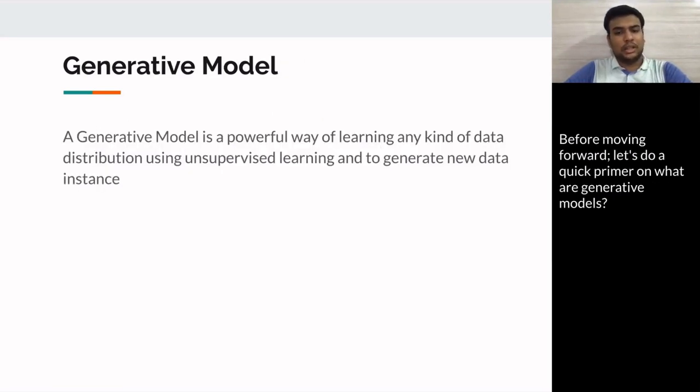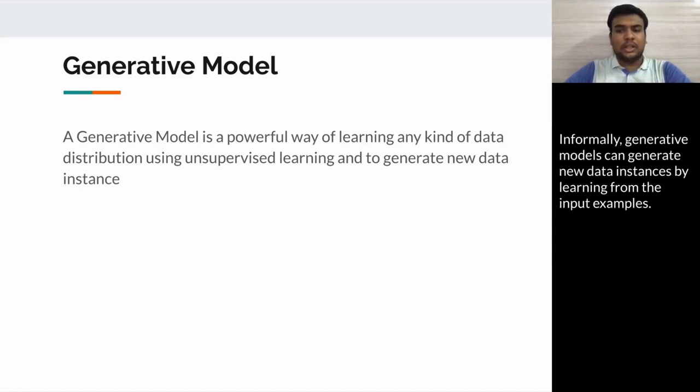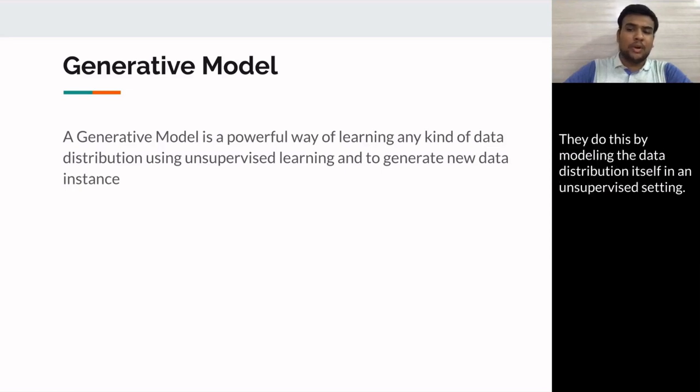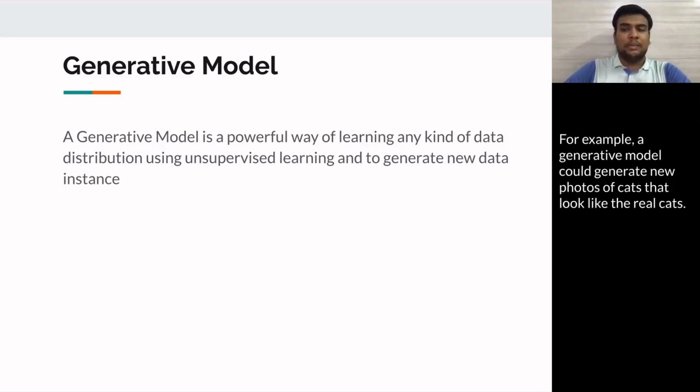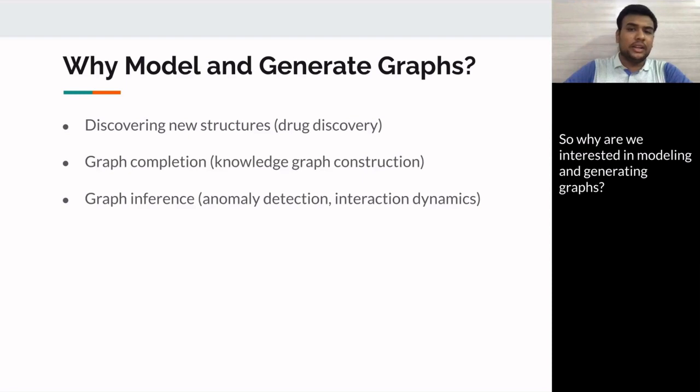Before moving forward, let's do a quick primer on what are generative models. Informally, generative models can generate new data instances by learning from the input examples. They do this by modeling the data distribution itself in an unsupervised setting. For example, a generative model could generate new photos of cats that look like real cats.